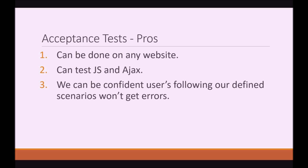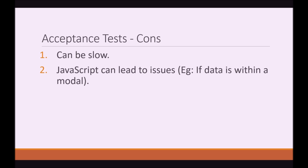Here are some pros of acceptance tests: it can be done on any website, we can test JavaScript and Ajax, and we can be confident that users following our defined scenarios won't get errors. What are the cons? It can be slow — every acceptance test will open a browser, perform some actions, and then close down, so if you have a lot of acceptance tests it can take a while.